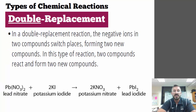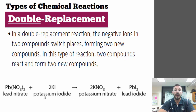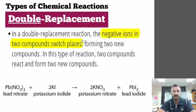Another example of a double displacement reaction — often called a precipitation reaction: lead(II) nitrate reacts with potassium iodide. The products are potassium nitrate and lead(II) iodide. In a double displacement reaction, the negative ions in two compounds switch places, and you get two new compounds.